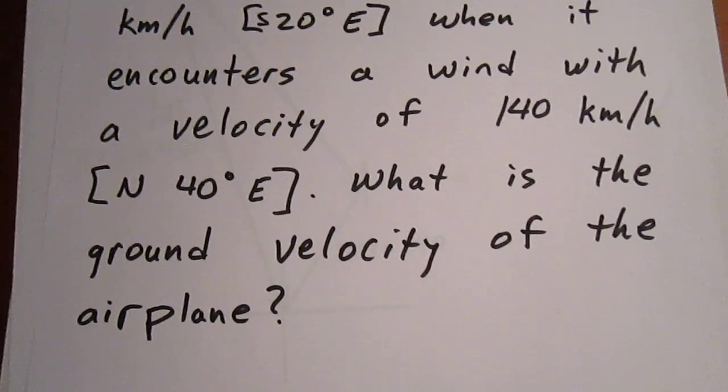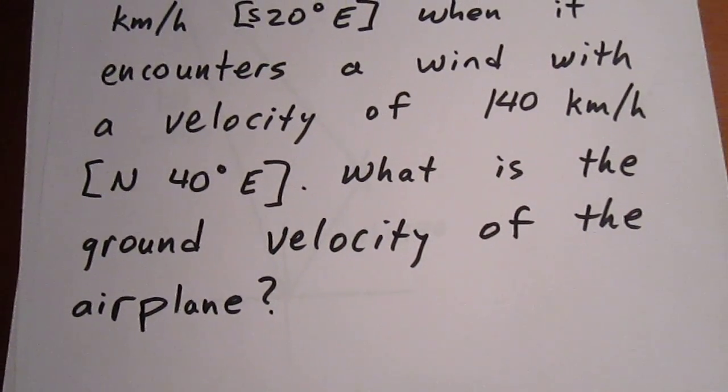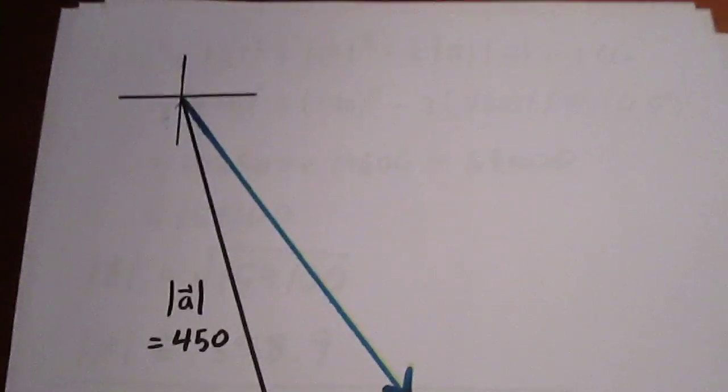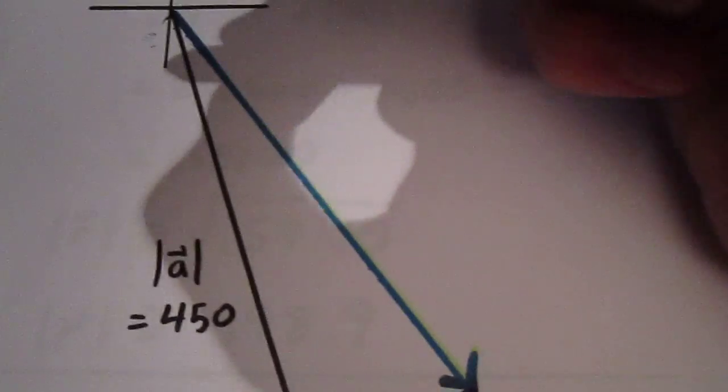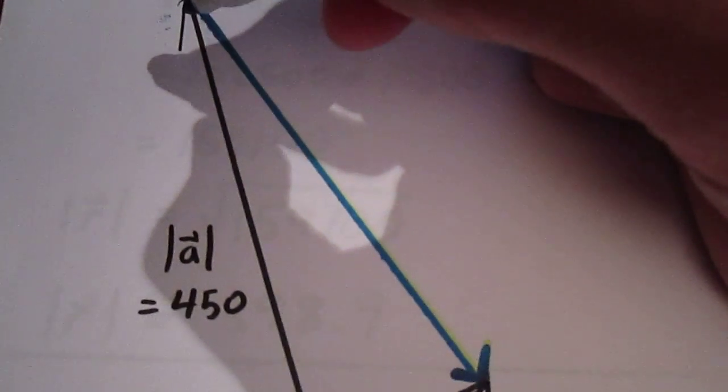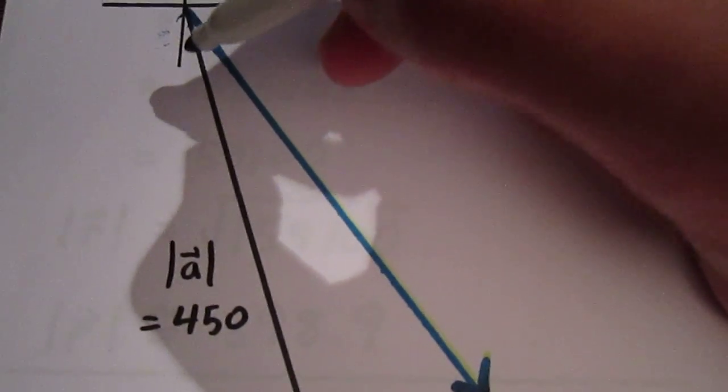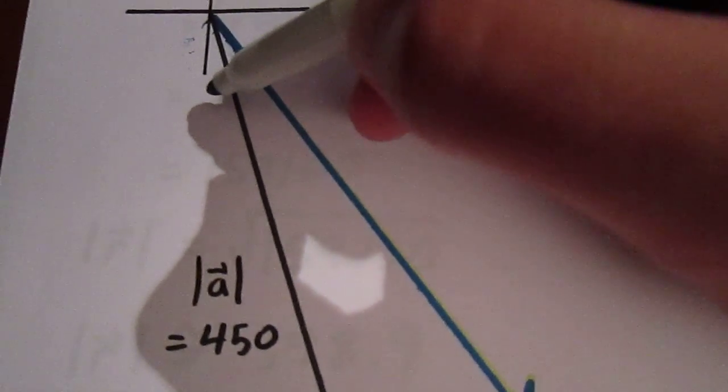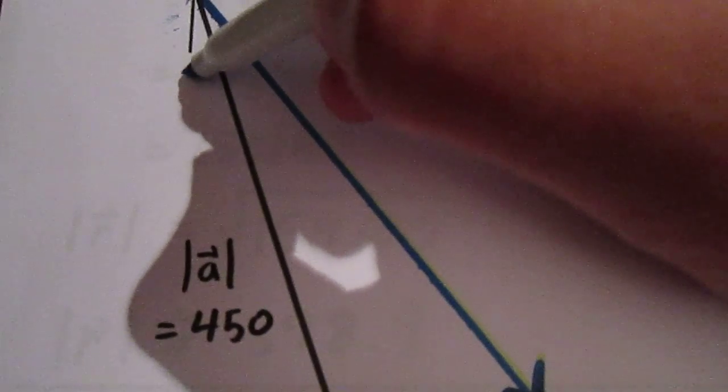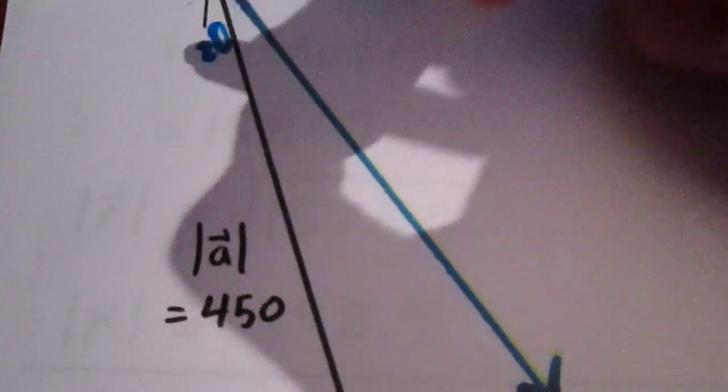What we're doing here is we're looking for the resultant vector. So we draw our diagram as best we can. We have a plane traveling 450 kilometers per hour in a direction south 20 degrees east, and that means we have a 20 degree angle right here.